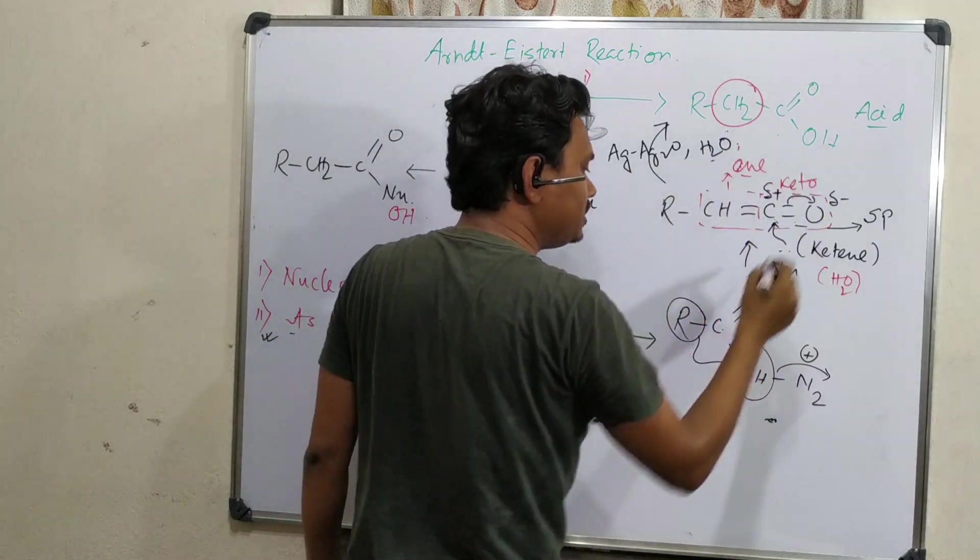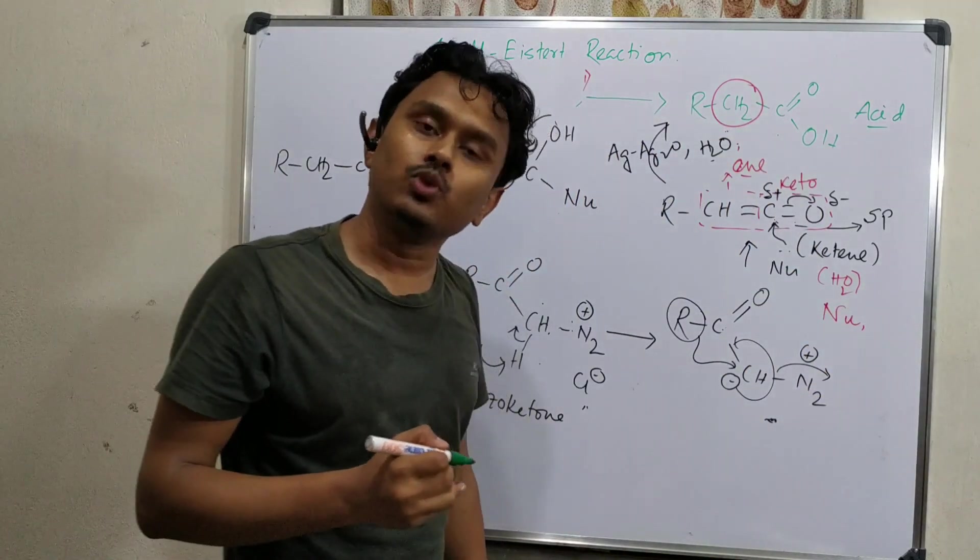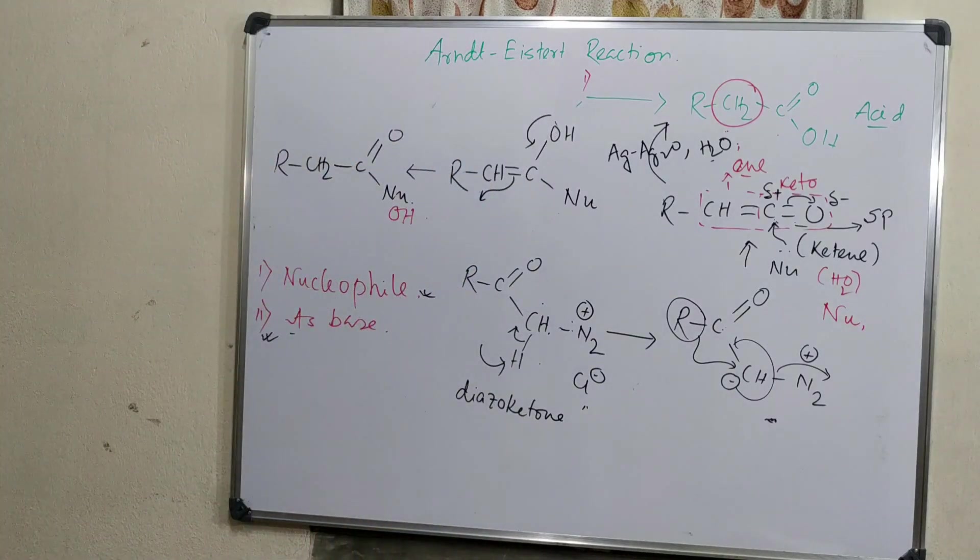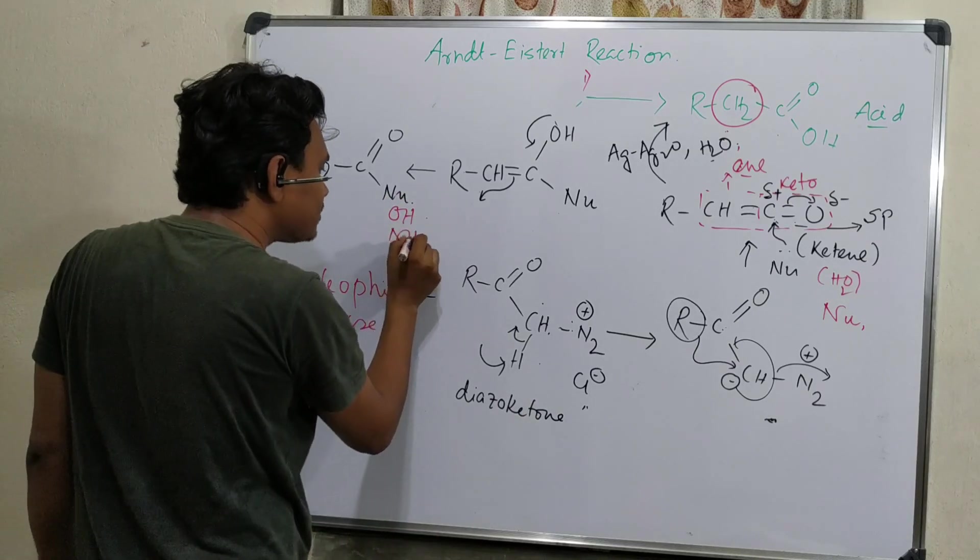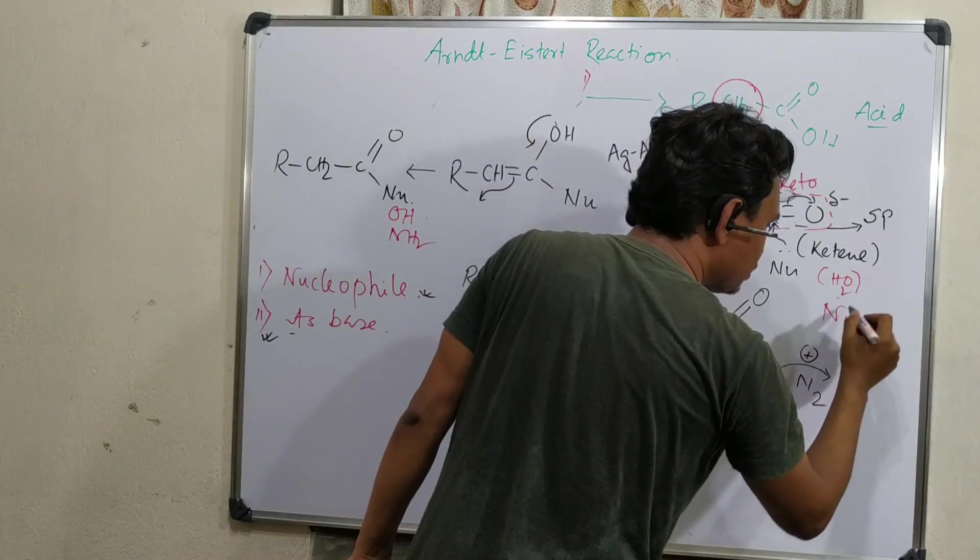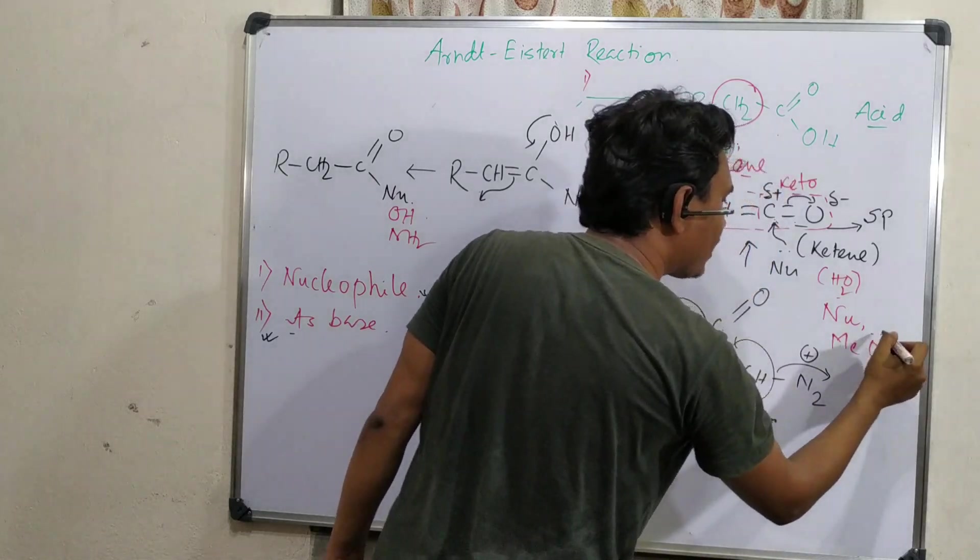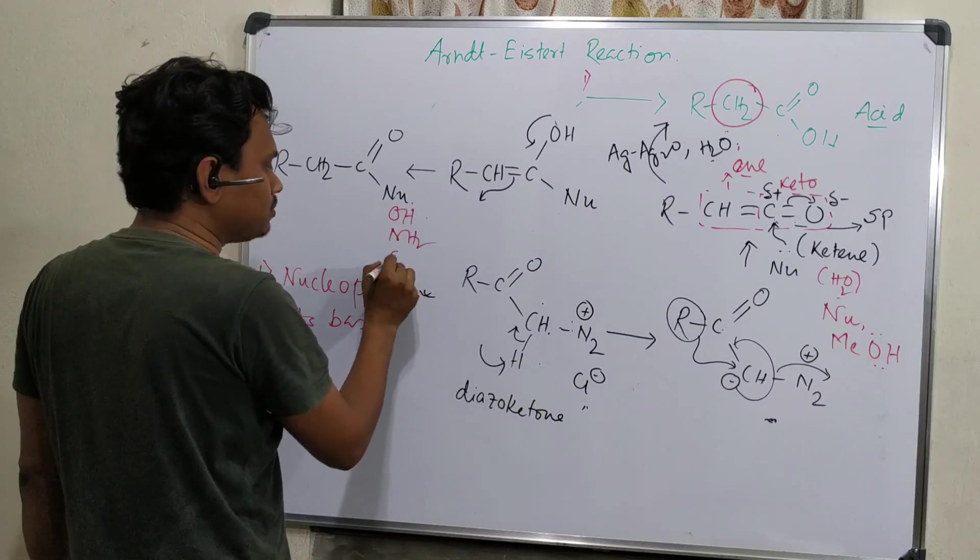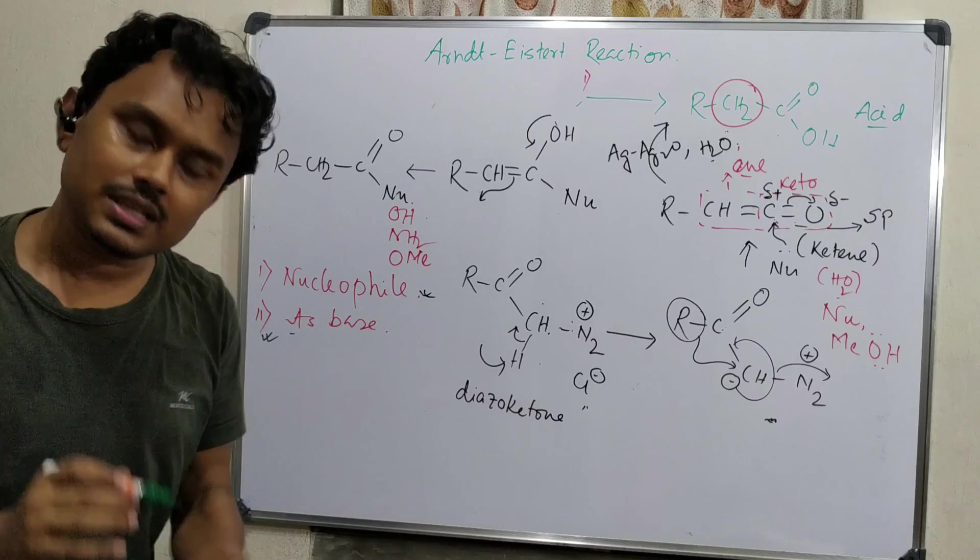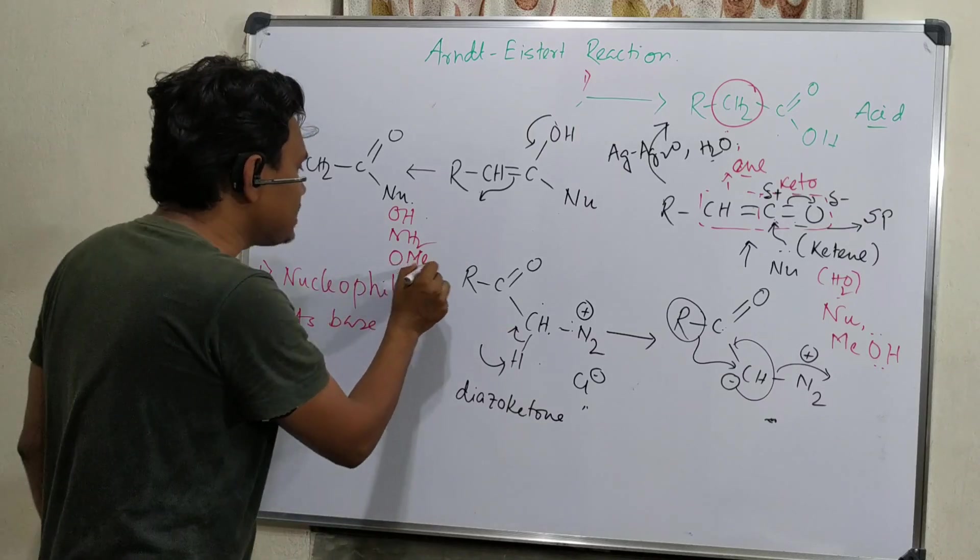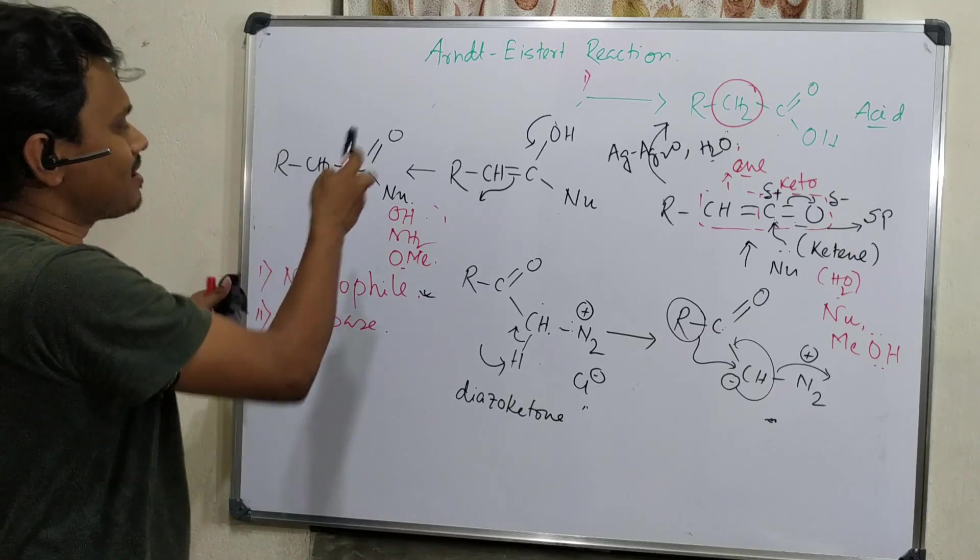Why I told Nu? Because if instead of silver oxide you take water, then nucleophile is water. Then if Nu is water, then the product is carboxylic acid. If nucleophile is ammonia, and in that case that should be silver nitrate ammonia or silver nitrate, then it will produce amide. And if the nucleophile is methyl alcohol, then one H will be replaced with methyl group, so that is ester. So this is a very basic crude explanation of this Arndt-Eistert reaction.